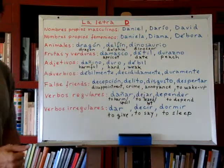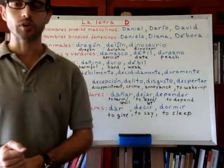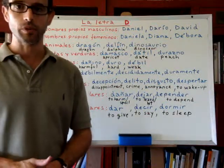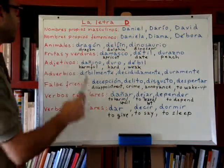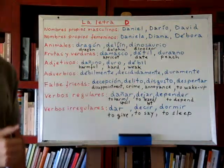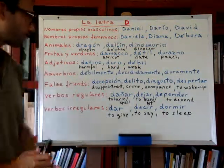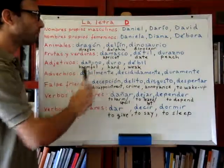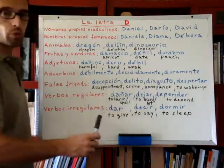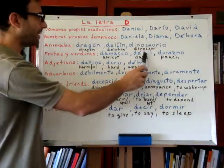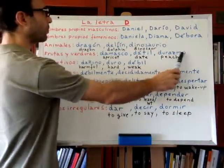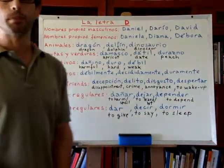Now we will see names of fruits — and vegetables — that begin with the letter D, although we will see fruits only. We have el damasco — the apricot. We have el dátil — the date. And we have el durazno — the peach.